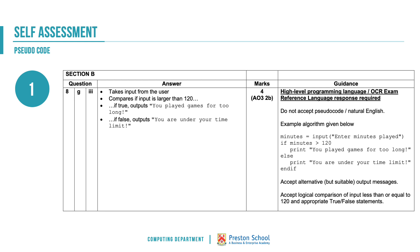And there is the mark scheme for that one. It is really important that we understand how to read the mark schemes for different exam papers — these are all available on the OCR website. On the left-hand side you've got the basic answer and where you get the different marks, one mark per bullet point. On the right-hand side you've got some guidance from OCR.